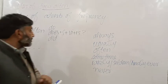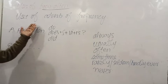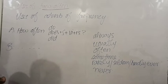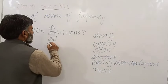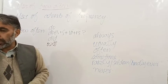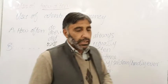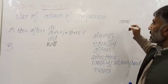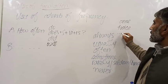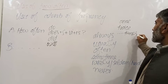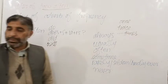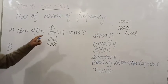We can ask questions about habitual actions, the past, or the future. For example: 'How often do you recite the Holy Quran?' — 'I always recite the Holy Quran,' 'I usually recite the Holy Quran,' 'I sometimes recite the Holy Quran,' or 'I recite the Holy Quran once a day.' You can also say twice a day, three times, four times, or five times a day.